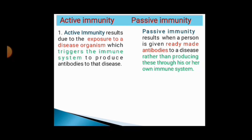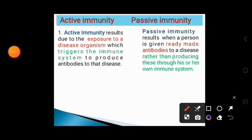Active immunity results from exposure to a disease organism, which triggers the immune system to produce antibodies to that disease. Whereas passive immunity results when a person is given ready-made antibodies to a disease rather than producing those antibodies through their own immune system. So in active immunity there is a trigger of the immune system, whereas in passive immunity there is introduction of ready-made antibodies, with no need of the host's own immune system.